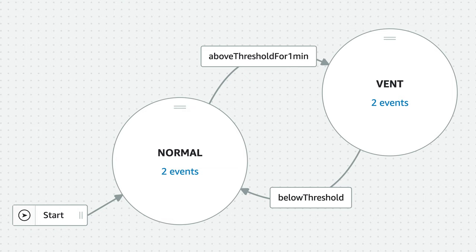This is the detector model of the system. It has two states: normal and vent. When the measured CO2 levels are above the threshold for more than one minute, it shifts from normal to vent and sends a turn-on signal to the fan. As soon as the measured CO2 levels are back to below the threshold, it shifts from vent to normal and sends a turn-off signal to the fan.